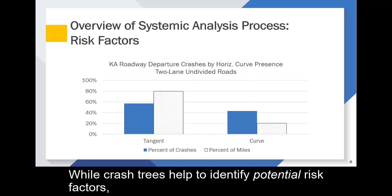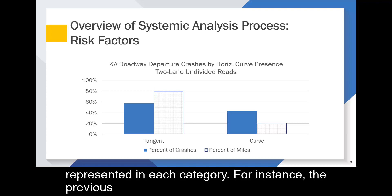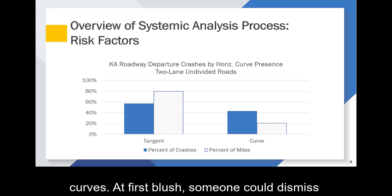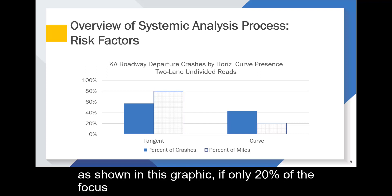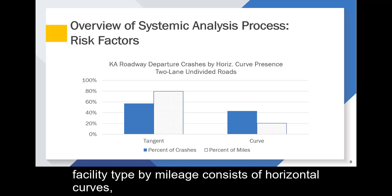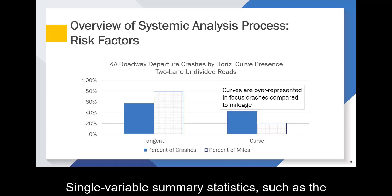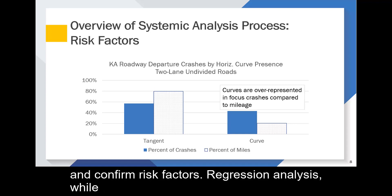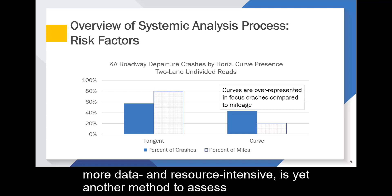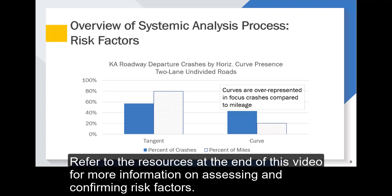While crash trees help to identify potential risk factors, one limitation is that crash trees do not account for the exposure represented in each category. For instance, the previous example showed that 43% of crashes occur at horizontal curves. However, if only 20% of the focus facility type by mileage consists of horizontal curves, then this indicates an over-representation of crashes on curves. Single variable summary statistics can help to identify over-representation and confirm risk factors. Regression analysis, while more data and resource intensive, is yet another method to assess and confirm potential risk factors and test statistical significance while accounting for potential confounding factors. Refer to the resources at the end of this video for more information on assessing and confirming risk factors.